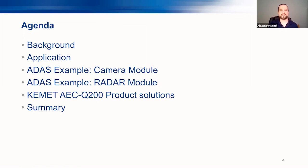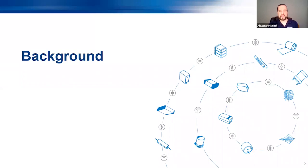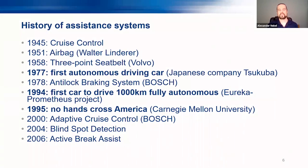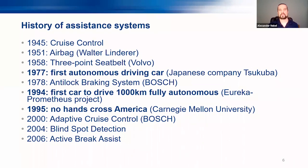Please wait until the end. Starting with the background — when I checked the history of assistance systems, it goes very far back. The first cruise control was already invented in 1945, and airbags have been in the market for nearly 70 years. The first autonomous driving car was in 1977, and the anti-lock braking system, invented by Bosch, was just one year later. Most of the assistance systems have been on the market for a long, long time.